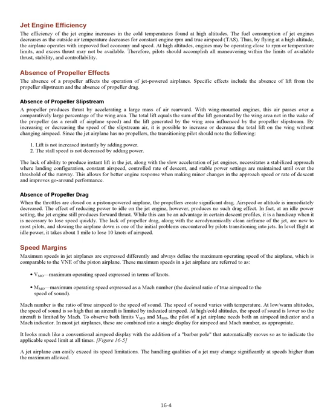Absence of propeller drag. When throttles are closed on a piston-powered airplane, propellers create significant drag and airspeed or altitude decreases immediately. Reducing power to idle on a jet engine, however, produces no such drag effect — at idle power, the jet engine still produces forward thrust. While this can be an advantage in certain descent profiles, it is a handicap when it is necessary to lose speed quickly. The lack of propeller drag, along with the aerodynamically clean jet airframe, means slowing the airplane is one of the initial problems encountered by pilots transitioning to jets. In level flight at idle power, it takes about 1 mile to lose 10 knots.